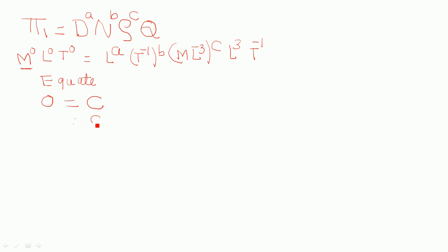Therefore c is equal to 0. Then L. For M power equal to 0, c plus 3, since c is equal to 0 here, put in this term, therefore a is equal to minus 3. This is for M, this is for L.